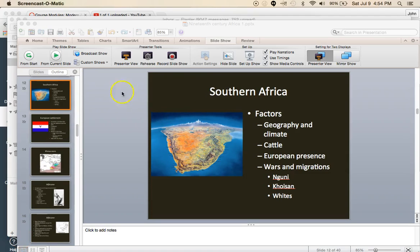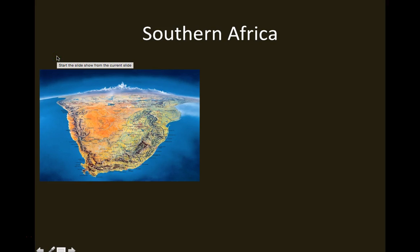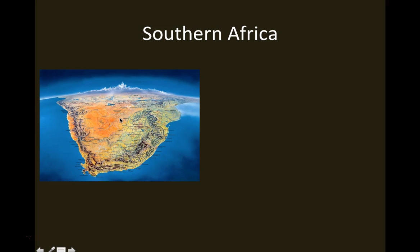This lecture is part of the History 363 Modern Africa class and it will address southern Africa in the 19th century, really up until about 1870 or so. This is a very different geographic situation than we've encountered previously. Southern Africa is cut off by some geographic obstacles from the rest of sub-Saharan Africa.